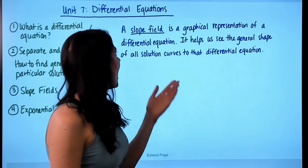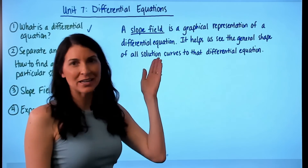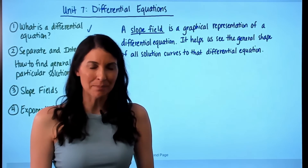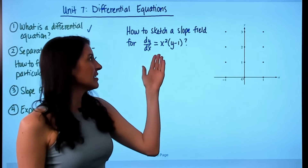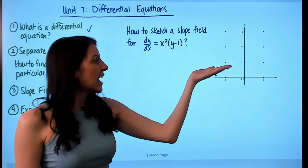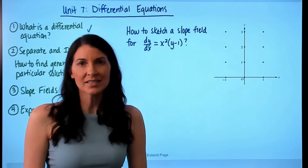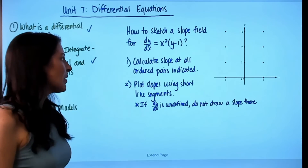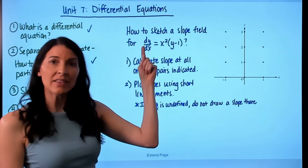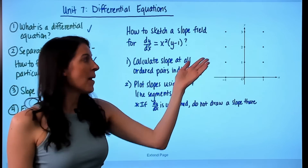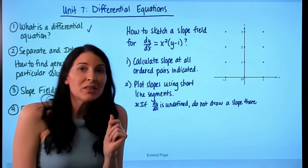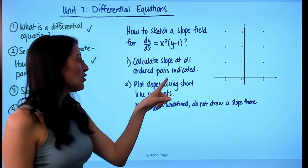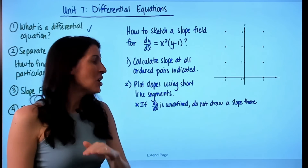Next is slope fields. A slope field is a graphical representation of a differential equation, and it helps us see the general shape of all solution curves to that differential equation. To sketch a slope field, you would be given a graph of specific ordered pairs. The first step is to calculate the slope using the given differential equation at all indicated ordered pairs — in this example, at all 12 points. Then, once you know the slope at each point, plot those slopes using very short line segments. Note: if you plug in an ordered pair and the derivative is undefined, do not draw a slope there.